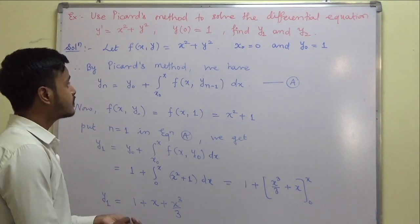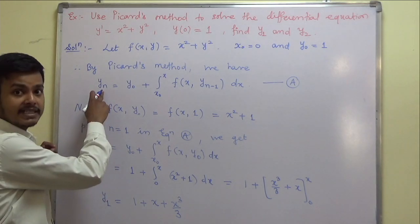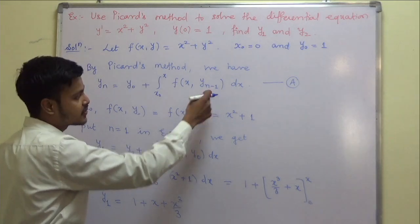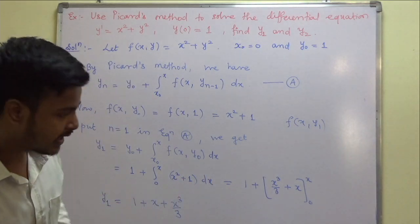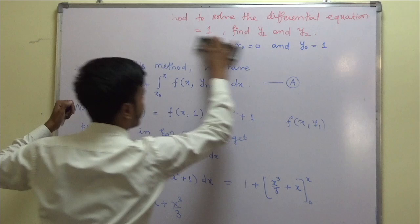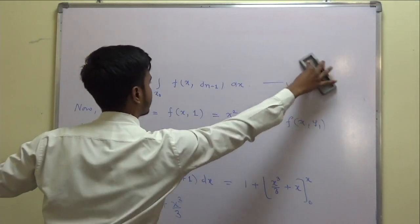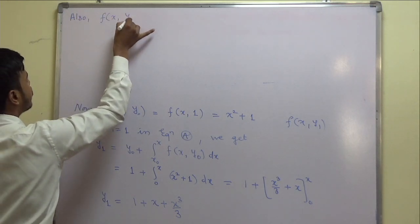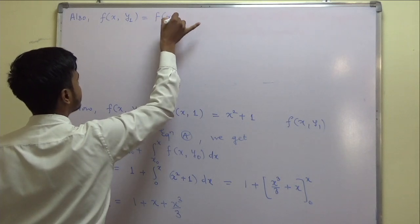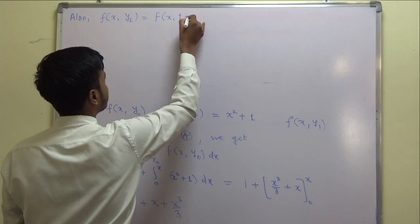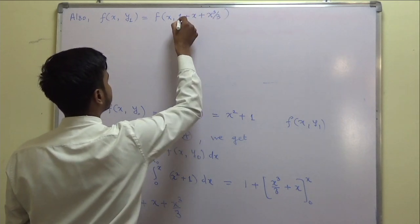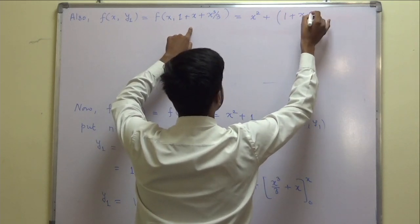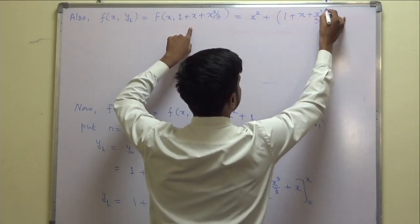Likewise, for y₂ we put n = 2, which requires f(x, y₁). Let us first find f(x, y₁). Since y₁ = 1 + x + x³/3, we get f(x, y₁) = x² + (1 + x + x³/3)². Now we need to expand (1 + x + x³/3)² using (a + b + c)².